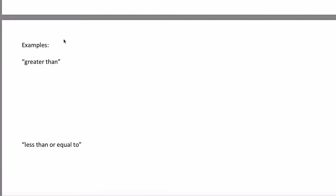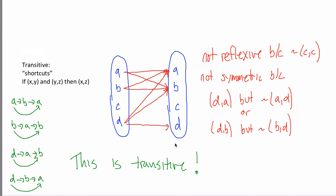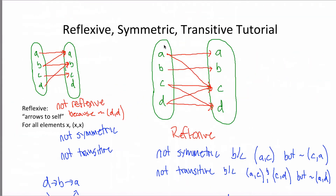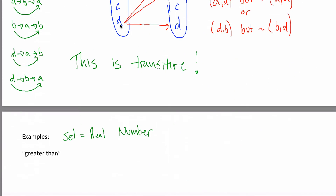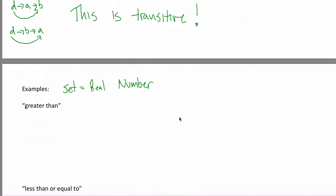What I have here are a couple more examples. I'm going to do some examples where the set that these relations are on is the set of real numbers. What I mean is in my first example, I had this abstract set that contained the elements A, B, C, and D, and my relation was on that set, meaning from that set to itself. What I'm going to do now is instead of having A, B, C, and D as my elements, any real number could be in my element.